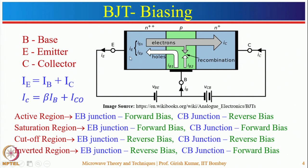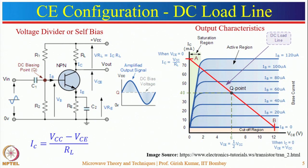The collector current in common emitter configuration is given by Ic = β·Ib + Iceo, where Iceo is the reverse saturation current. Both β·Ib and Iceo are temperature dependent, so increasing temperature can increase collector current, potentially causing transistor breakdown. Therefore, stabilization is needed. Various stabilization circuits exist, and the voltage divider biasing circuit is the most common biasing circuit.